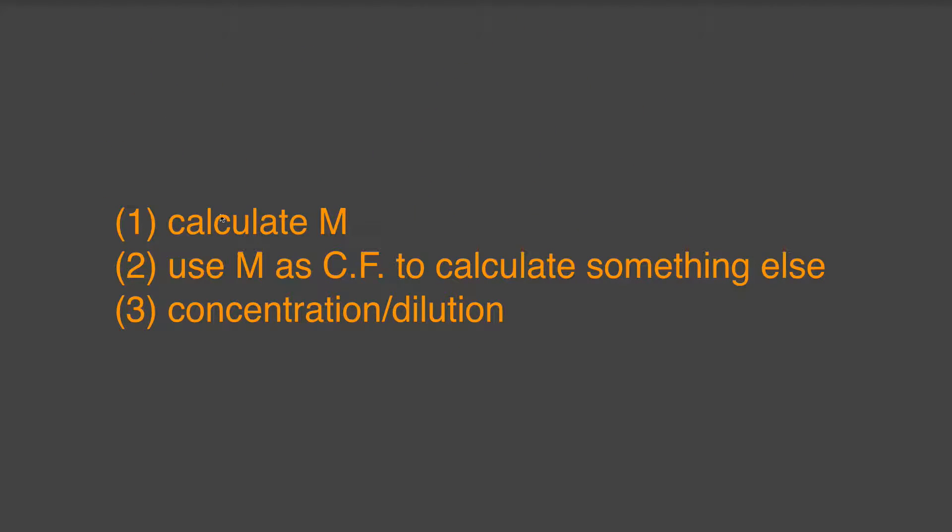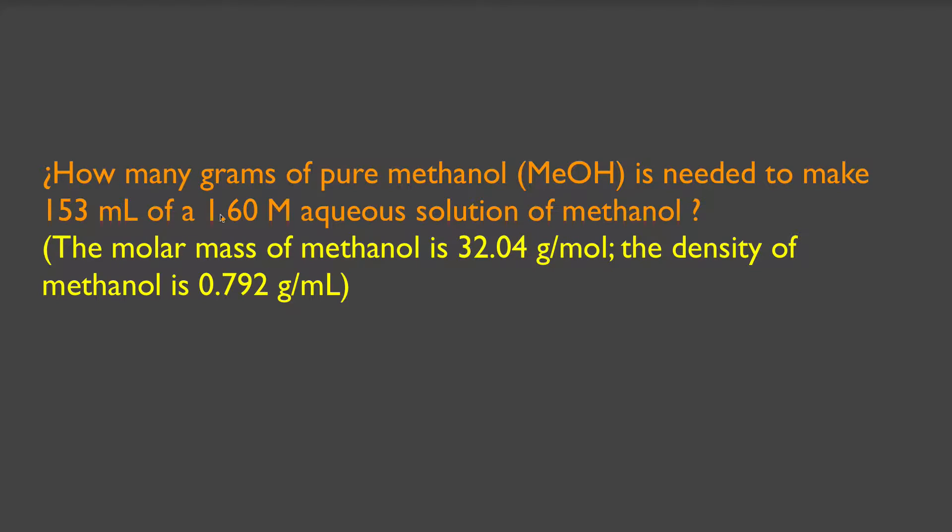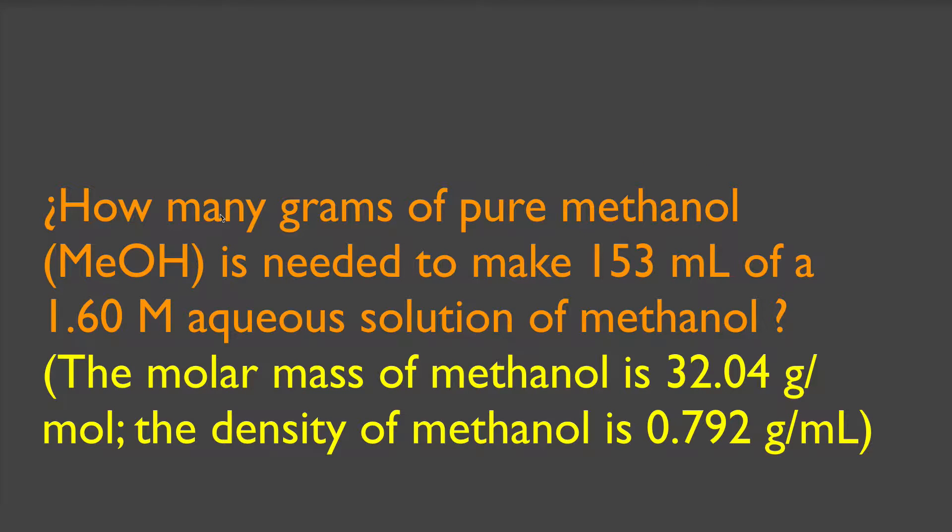Let us now move to the second type of problem, which is using molarity as a conversion factor to calculate something else. And for consistency, let's use the same data and same materials as the previous question, only let's mix it up just a little bit. So here we go. How many grams of pure methanol is needed to make 153 milliliters of a 1.6 molar aqueous solution of methanol? The molar mass of methanol is 32.04 grams per milliliter, and the density of methanol is 0.792 grams per milliliter. So let's extract the data and see what we have.